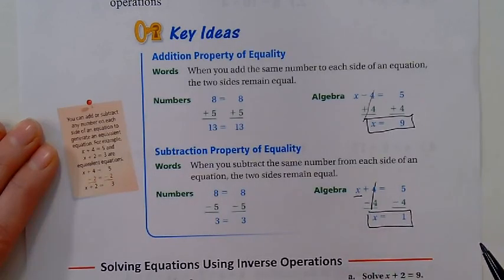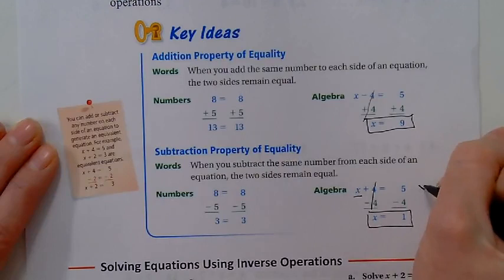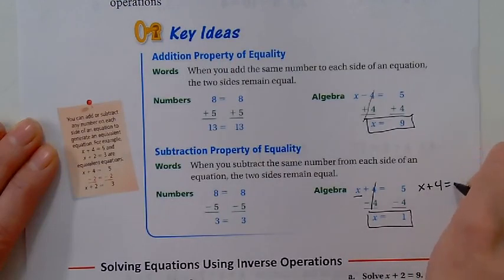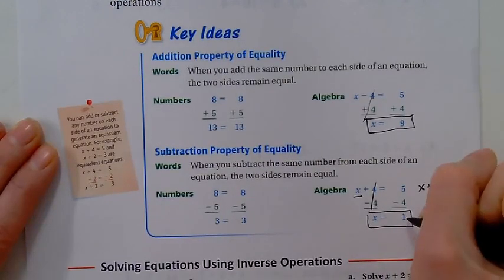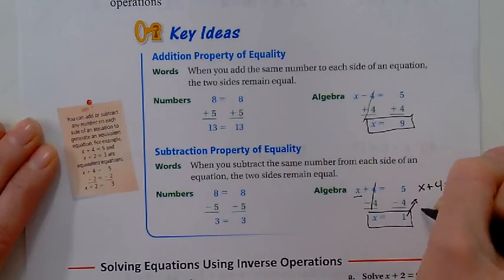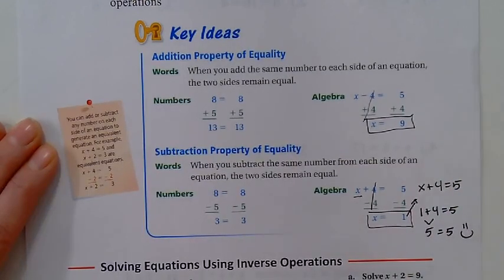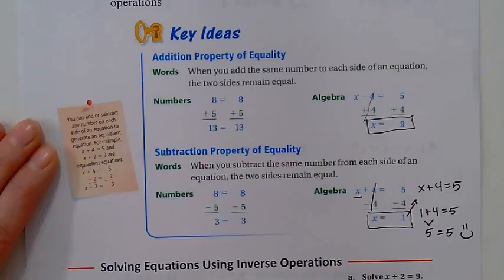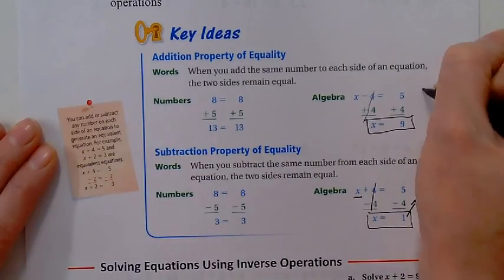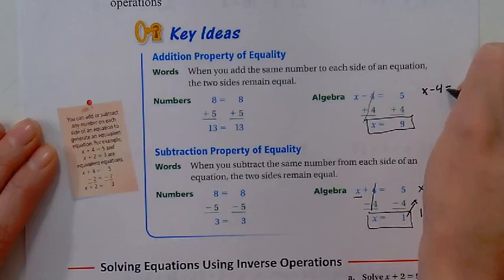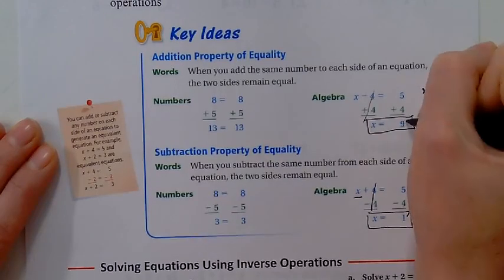Now I want to make sure that works, right? So I have x plus 4 equals 5. All right, let's plug in our 1. 1 plus 4 equals 5. Wouldn't you know it, 5 equals 5. Ding ding! Right, we're amazing.